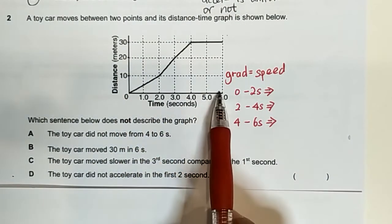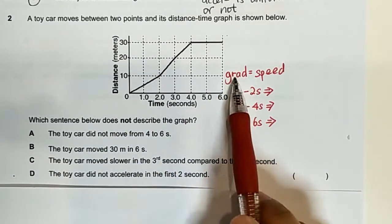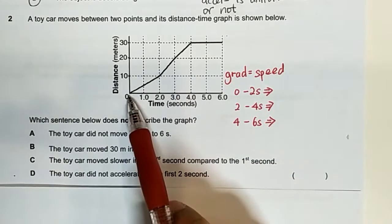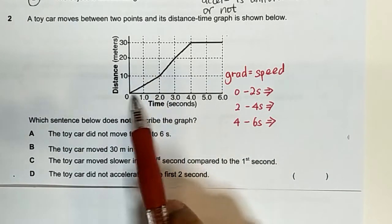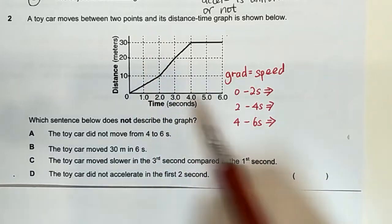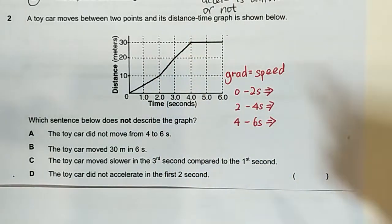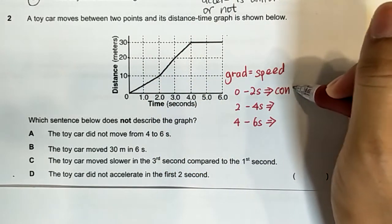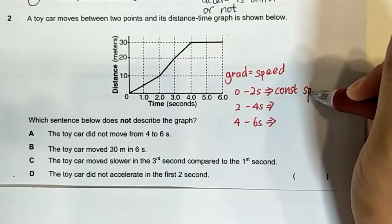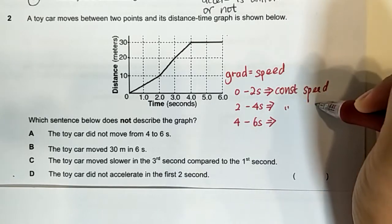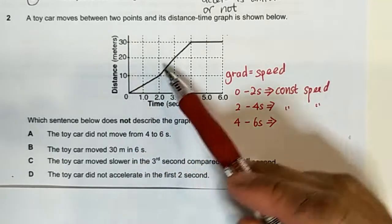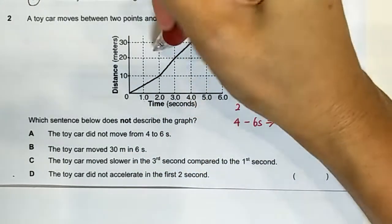This question again is a distance-time graph and let's remember that gradient gives you the speed. From 0 to 2 seconds it is a constant gradient, 2 to 4 is also constant gradient, so I know that means it is constant speed for both. But if you look at the gradient this is steeper, so this graph is a steeper graph.